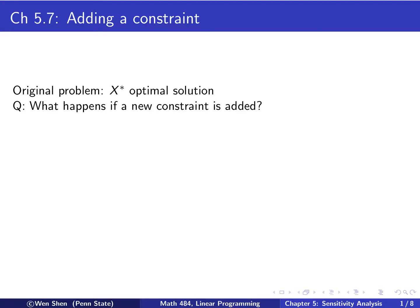Hello everyone, welcome to video 11 of chapter 5. In this video, we'll cover chapter 5.7. We'll talk about what happens if we add an additional constraint. Okay, so let's get started.